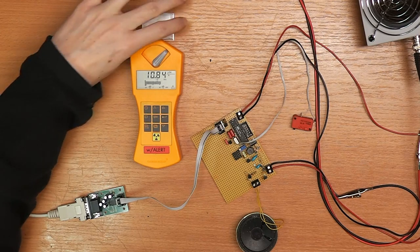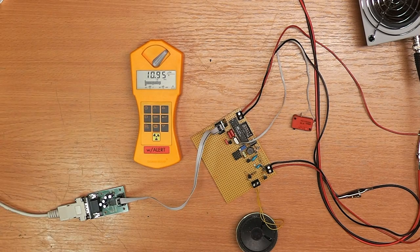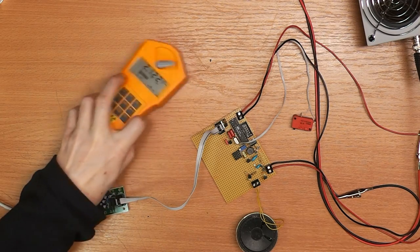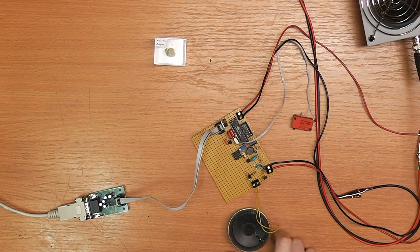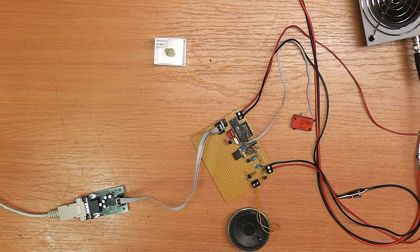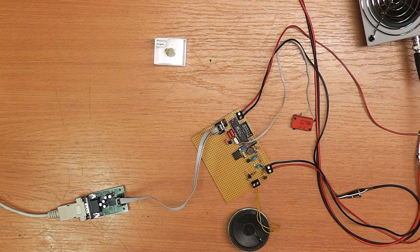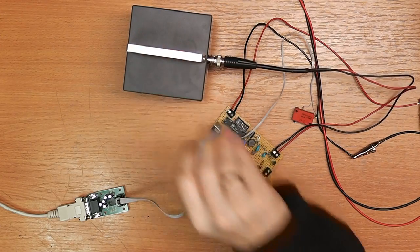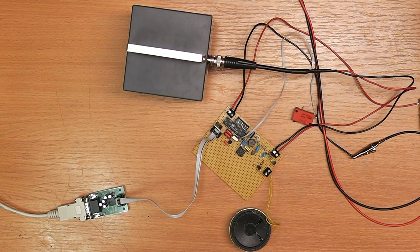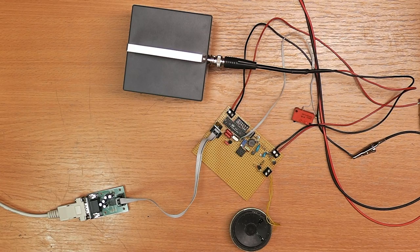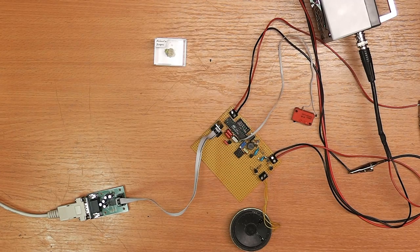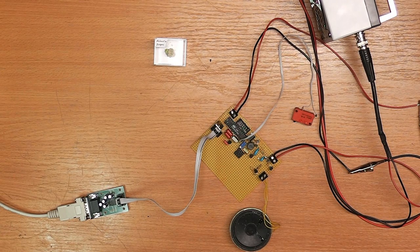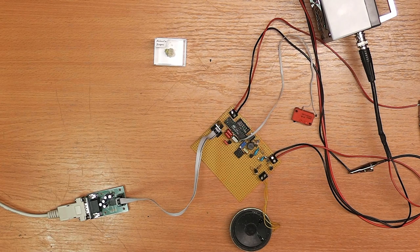So we've seen about 20 counts per second with this source here. And now let's see what the pancake probe measures. I'll first leave the clicker on, but then immediately I'm going to turn it off because it's going to go crazy. So here we can see about 183 counts per second. So again about 10 times as sensitive as the Gamma Scout.